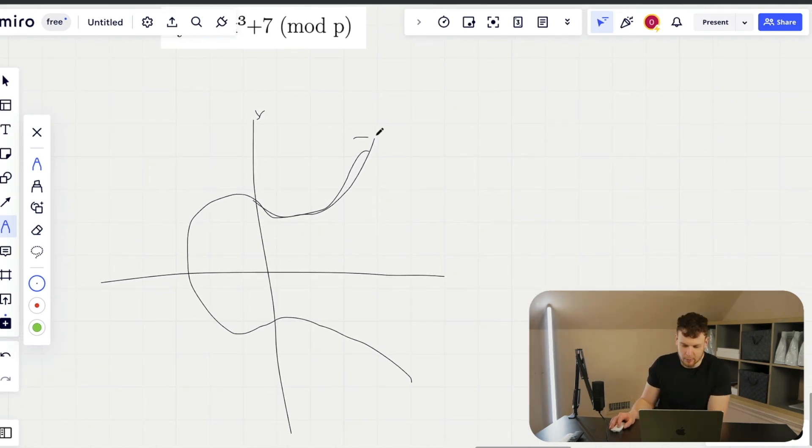But basically, without getting too in depth of what this means and how exactly you could compute this and prove this out to yourself, we can basically just say that you'll notice that the curve cuts off right here, and this is going to be the y value.